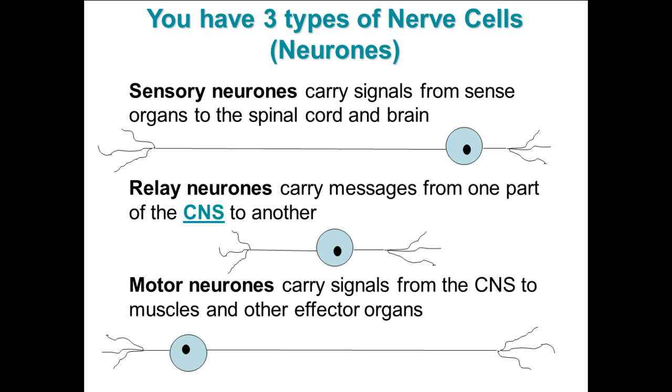Thanks for joining me again. This is my second video to do with nerve cells and the nervous system. Last time we were looking at how the nervous system was organized. The first thing we're going to look at today are the three types of nerve cells or neurons.